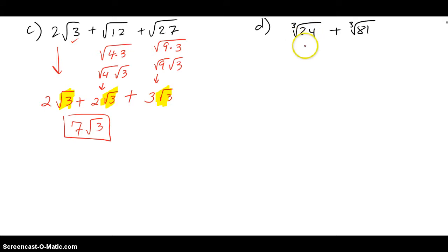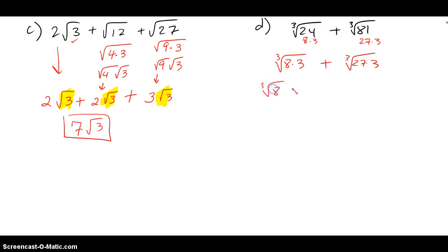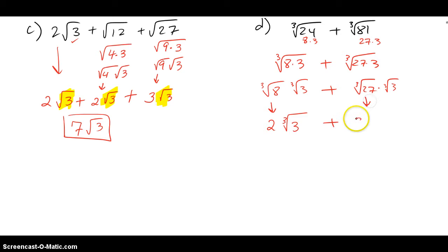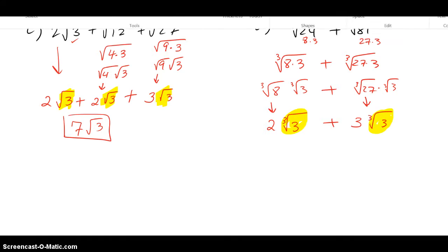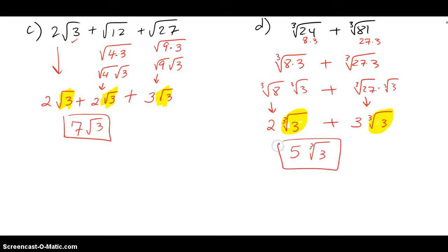Part D involves cube roots. I split ∛24 as ∛8 times ∛3, since 8 is a perfect cube. For the other term, I think of it as ∛27 times ∛3, since 27 is a perfect cube. Since these are like radicals, I combine the coefficients — 2 and 3 give me 5 — so the answer is 5∛3.